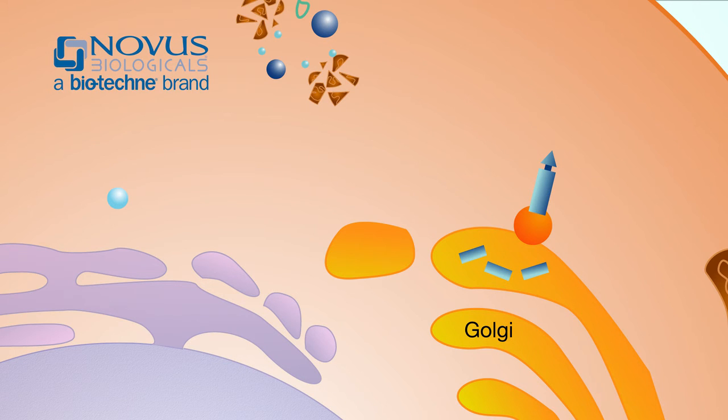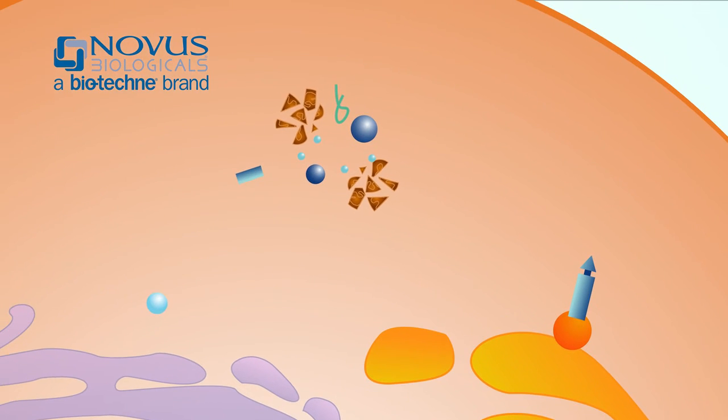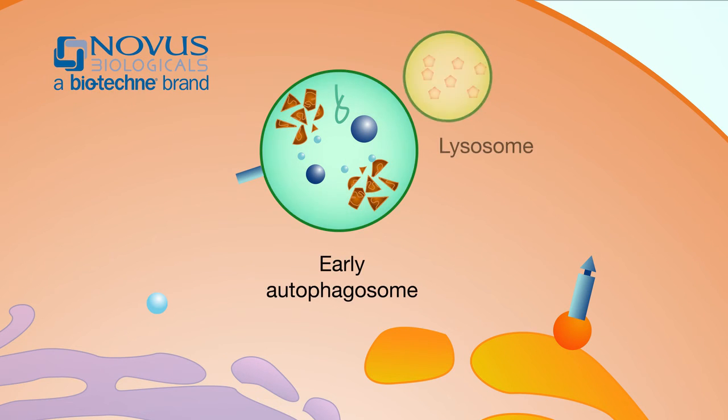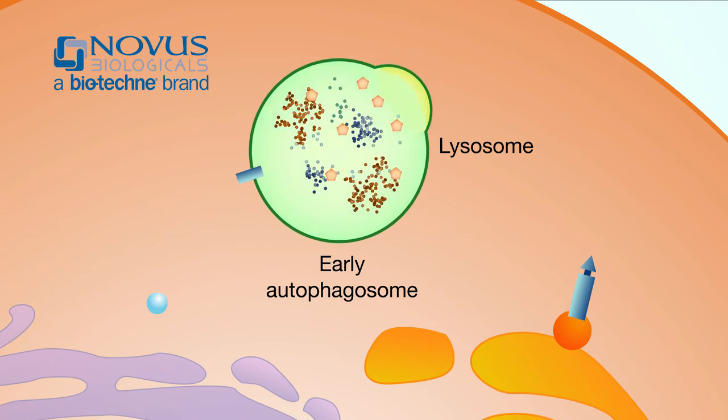By occupying GAPR1, the peptide allows free Beclin-1 to induce autophagy and initiate the formation of the early autophagosome, which then fuses with lysosomes to degrade cellular components for reuse.